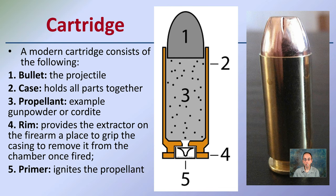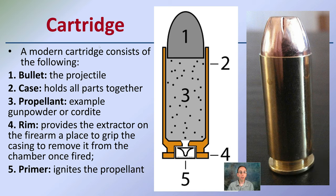The cartridge consists of a bullet, which would be number one; then the case, which holds all the parts together. Inside the case would be the propellant — for example, gunpowder. Then we have the rim, which is the very end portion, and that provides the firearm's extractor a place to grip the casing and remove it once fired. At the very bottom center we have the primer, which ignites the propellant.